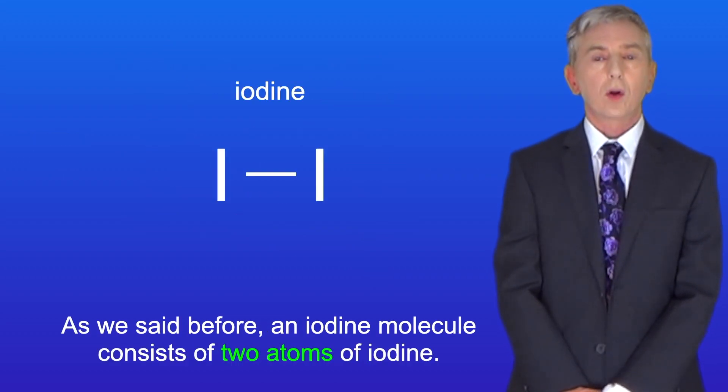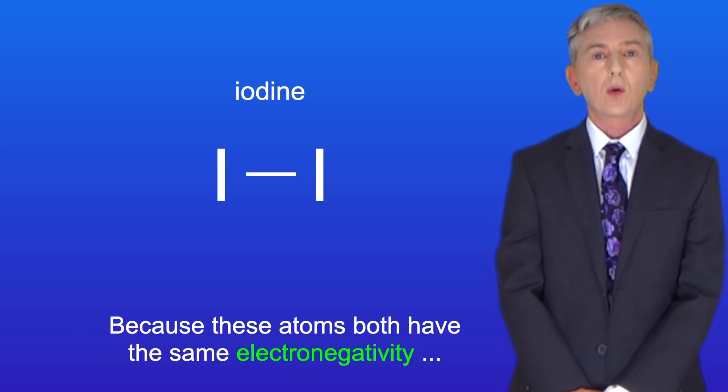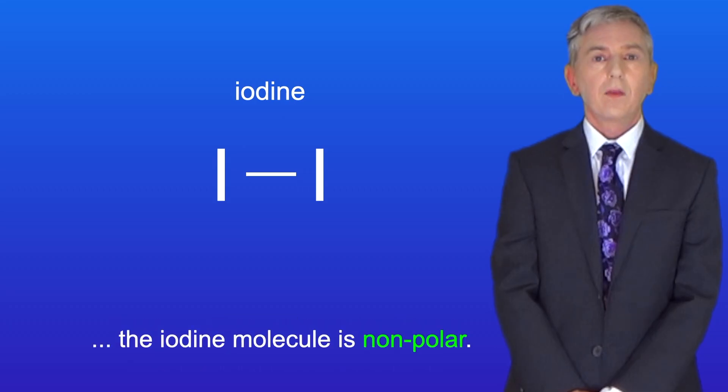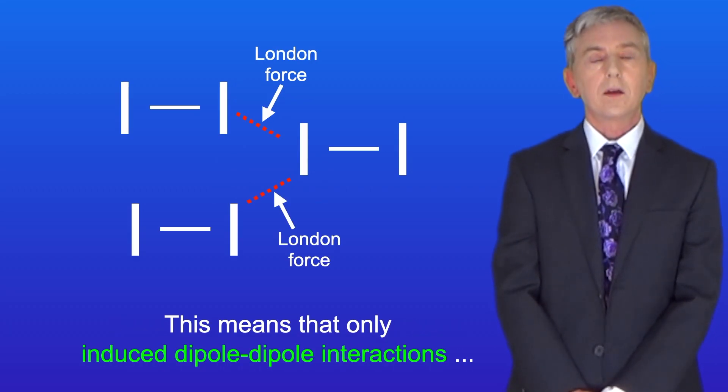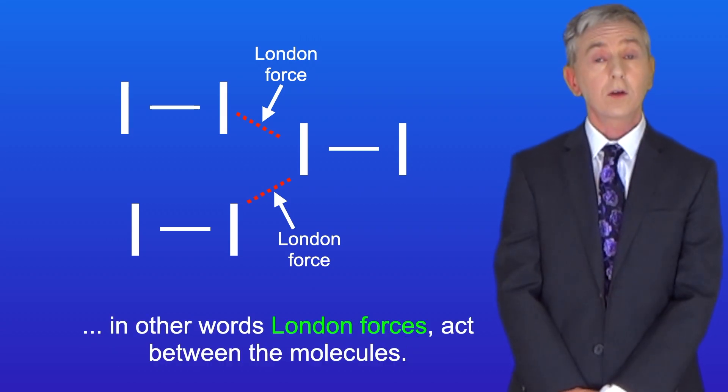Now as we said before an iodine molecule consists of two atoms of iodine. Because these atoms both have the same electronegativity the iodine molecule is non-polar. This means that only induced dipole-dipole interactions, in other words London forces, act between the molecules.